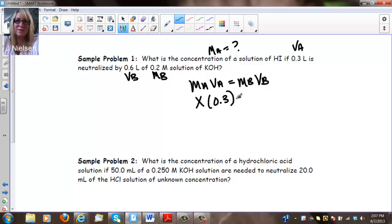So I write my formula MAVA equals MBVB and I get X times 0.3 equals 0.2 molar times 0.6. And I have liters and liters so I don't have to worry about units. So in solving for X, I'm just simply going to divide both sides by 0.3 and these will cancel. So my X is going to be equal to 0.4 molar. So 0.4 molar HI and that's my answer.